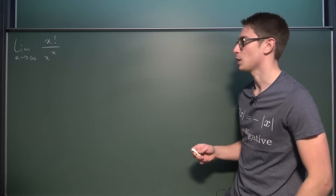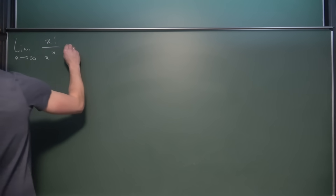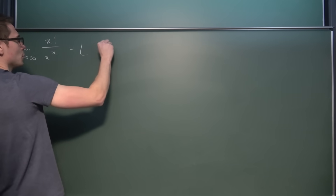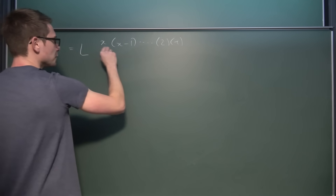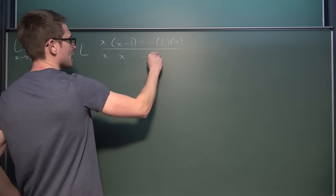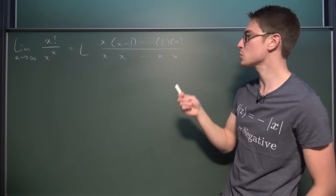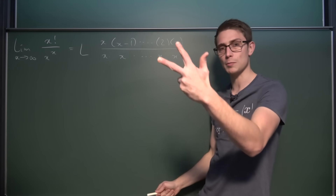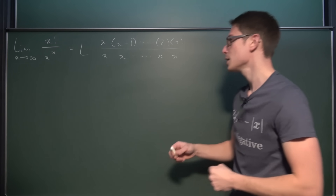We're going to start with the beginner way, which is kind of heuristic — why not just write everything out and see what we get? I'm going to denote the limit as x approaches infinity as capital L. x factorial is x times (x−1) times … down to 2 times 1, divided by x to the x, which is x multiplied by itself x times. Both the numerator and denominator consist of x terms overall — for example, 3 factorial is 3×2×1, three terms; 3 to the third is 3×3×3, also three terms.